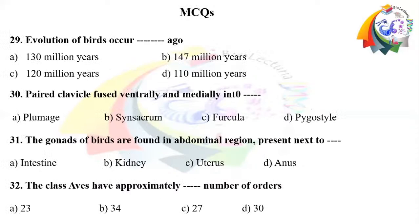Question number 29: Evolution of birds occurred dash years ago. Option A: 130 million years. Option B: 147 million years. Option C: 120 million years. Option D: 110 million years.